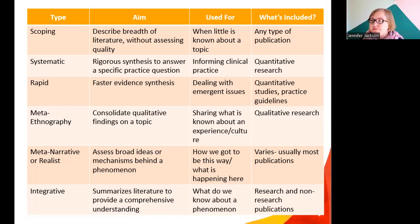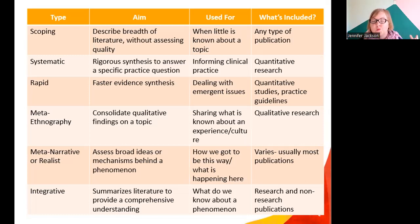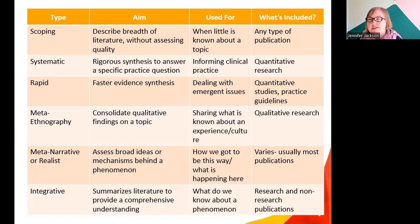For example, if we wanted to look at how we understand why young people take up smoking or vaping, a narrative review over time might show that at one point this was framed as bad choices by bad people, then shifted to an individual lens, and now perhaps to a social construction of behavior. So we're looking at the story and how it changed over time. With meta-narrative reviews, you can include different kinds of publications, and sometimes things that aren't empirical peer-reviewed evidence — like reports — though that varies depending on the rules of that type of review.